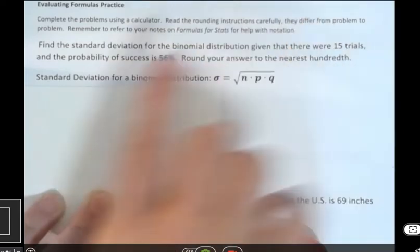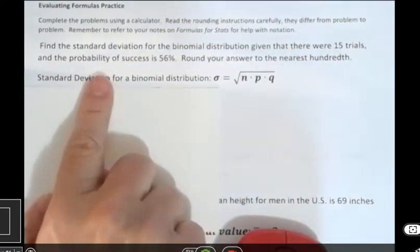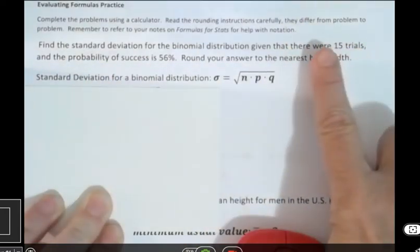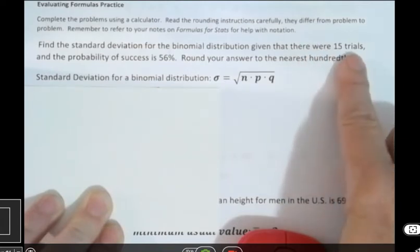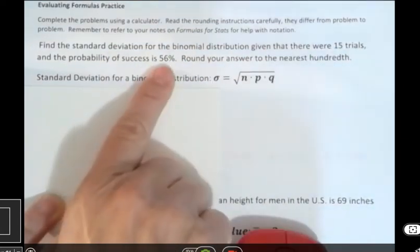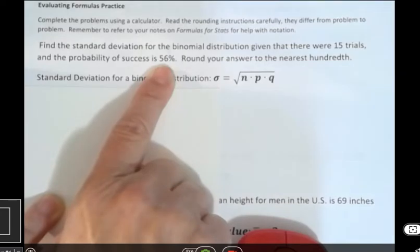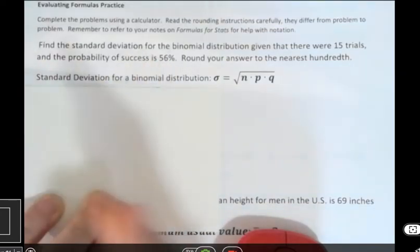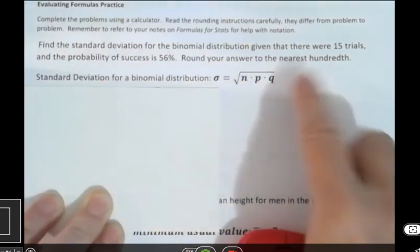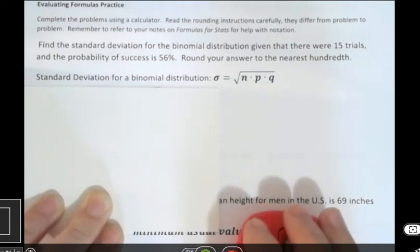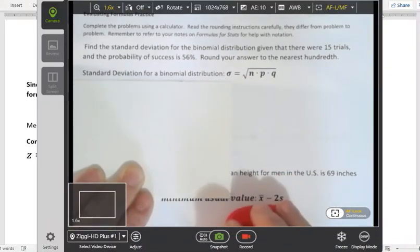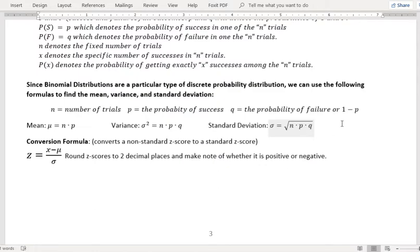This is asking you to find the standard deviation for binomial distribution given that there were 15 trials and a probability of success of 56%. So that's two values. It looks like we need three. So in order to figure out what we're actually talking about, I'm going to go into that document and see what I have there.